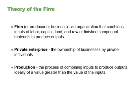So what do we mean by the firm? A firm, or producer, or business combines inputs of labor, capital, land, and raw or finished component materials to produce outputs. If the firm is successful, the outputs are more valuable than the inputs. This activity of production goes beyond manufacturing, which means making things. It includes any process or service that creates value, including transportation, distribution, wholesale, and retail sales.